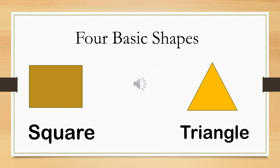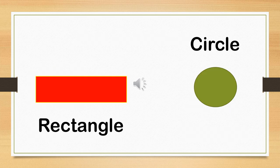Moving on to the next two basic shapes: first is the rectangle, in which opposite sides are equal. And the last one is the circle, which is round in shape.